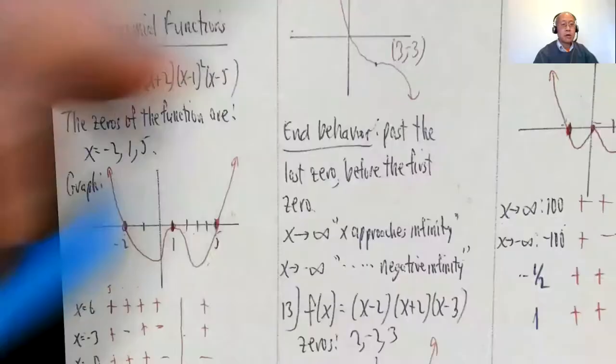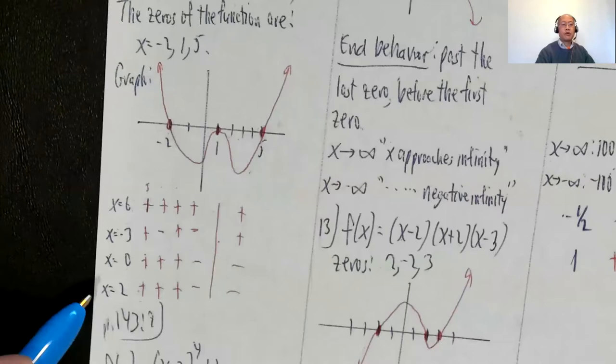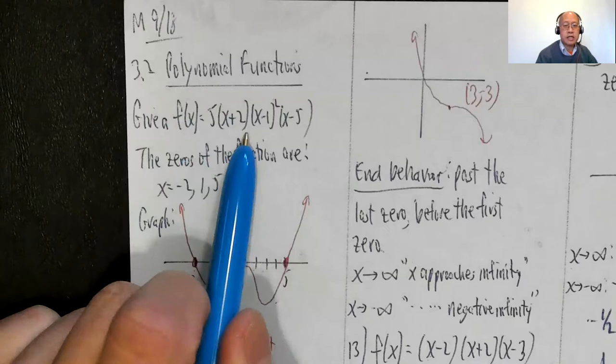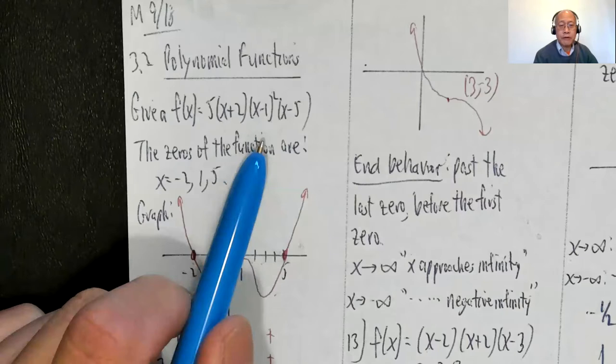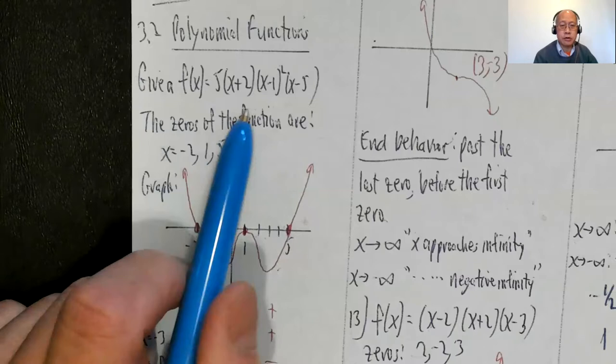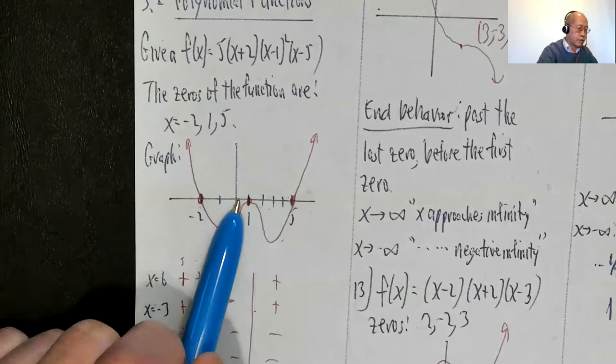Before we do some assigned problems, let's look at the general idea for working out polynomial functions. Suppose f(x) equals 5(x+2)(x-1)²(x-5) — I'm just making it up. To draw a rough sketch, first lay down the zeros: the values of x that make the function zero. Those are x = -2, 1, and 5. Right now the graph is just those three dots at -2, 1, and 5.